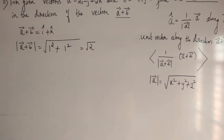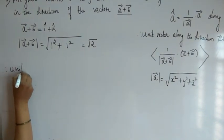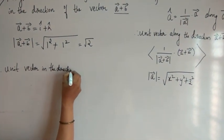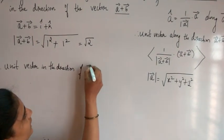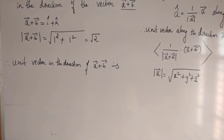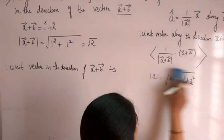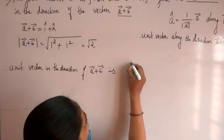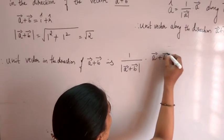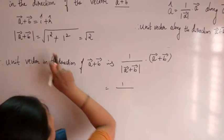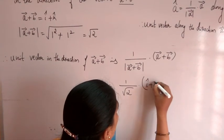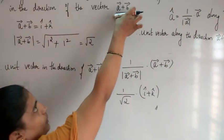Now we have to find the unit vector. Therefore, the unit vector in the direction of vector A plus vector B is 1 by magnitude of (A plus B), into (A plus B). That equals 1 by root 2, into (i-cap plus k-cap). This is the required unit vector along the direction of vector A plus vector B.